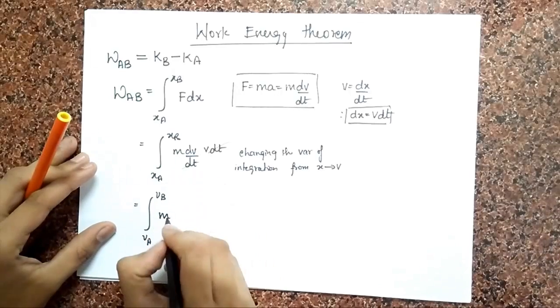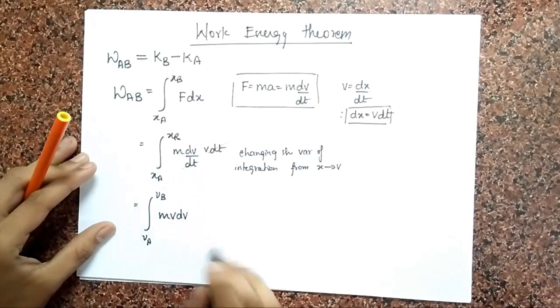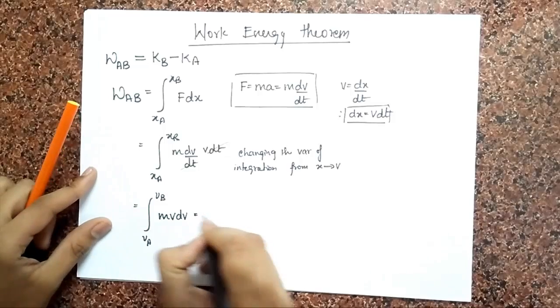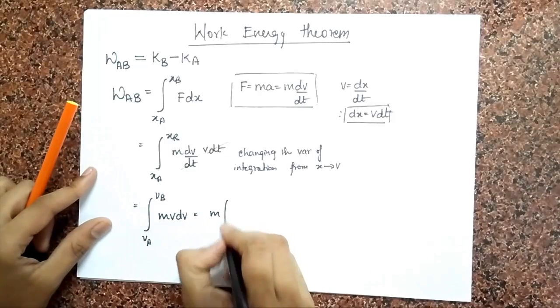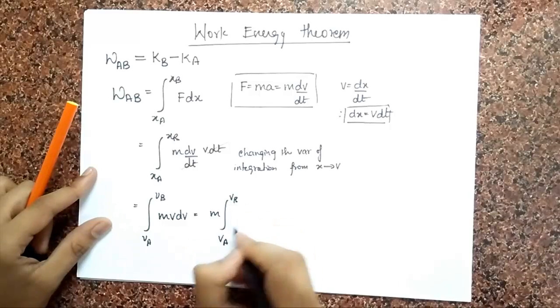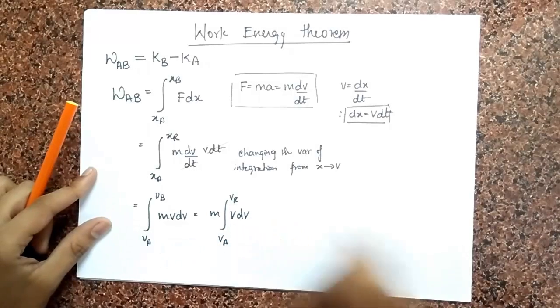I have an M, I have V, and I have a dV. I can just go ahead and remove that M out, and so I have VA to VB, V dV.